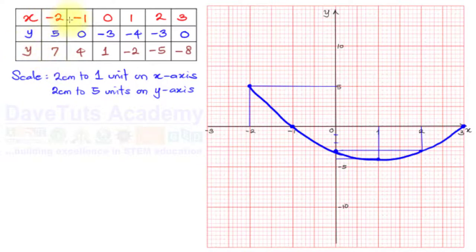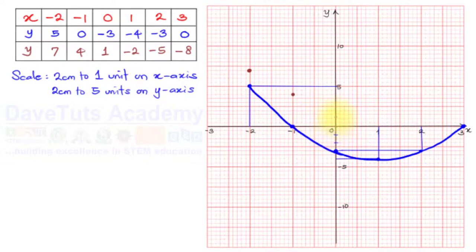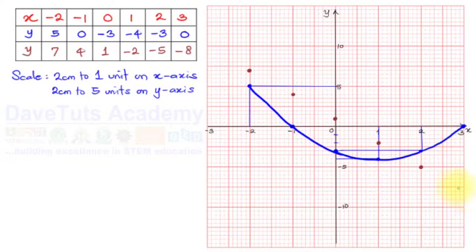For the linear graph: when x = -2, y = 7, so that point is plotted above the 5-mark. When x = -1, y = 4, which is two divisions before 5. When x = 0, y = 1. When x = 1, y = -2. When x = 2, y = -5. When x = 3, y = -8 — counting down to -5, -6, -7, -8. Join all these points with a straight line.